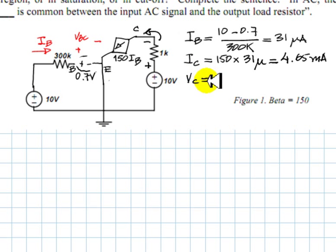What is the voltage at VC? Immediately, you say that is just 10 volts minus 4.65, which equals 5.35 volts. That is how high the collector is above the reference node.